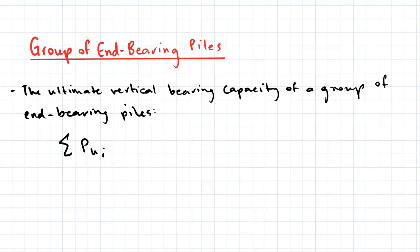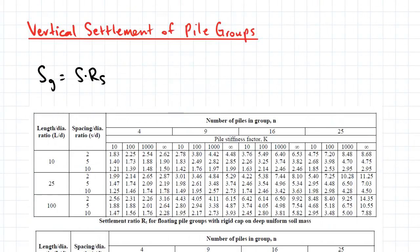The vertical settlement of pile groups is taken to be the product of the vertical settlement of a single pile with a ratio RS, which can be found from one of the tables below.